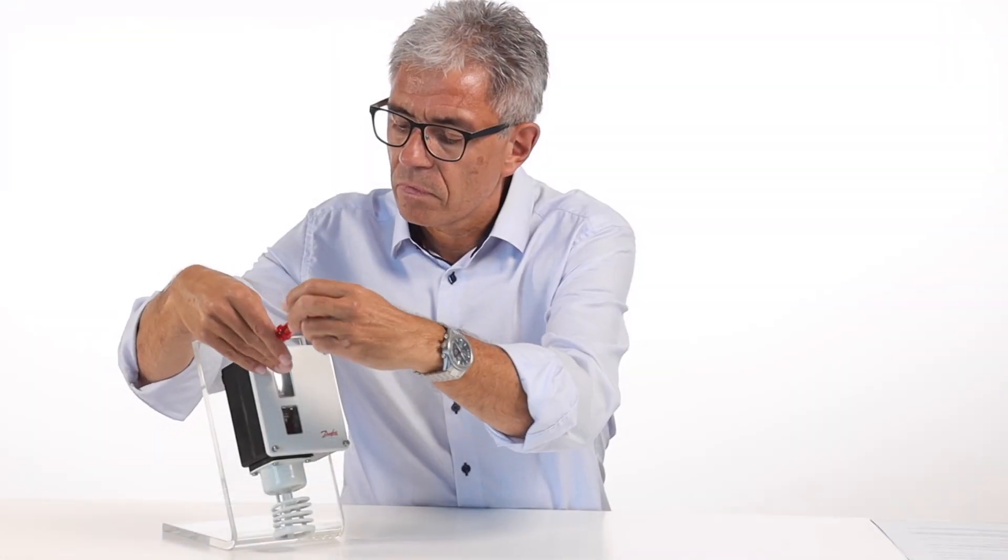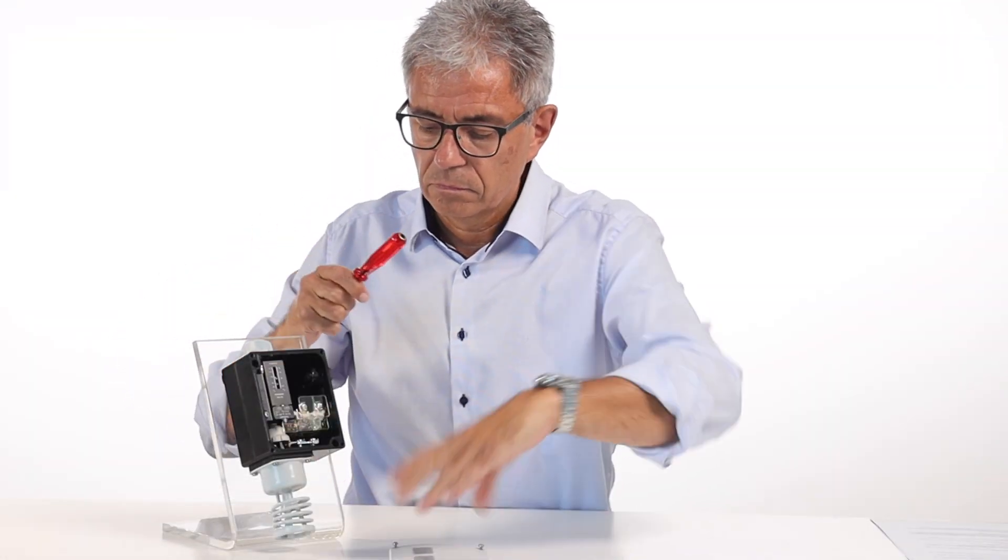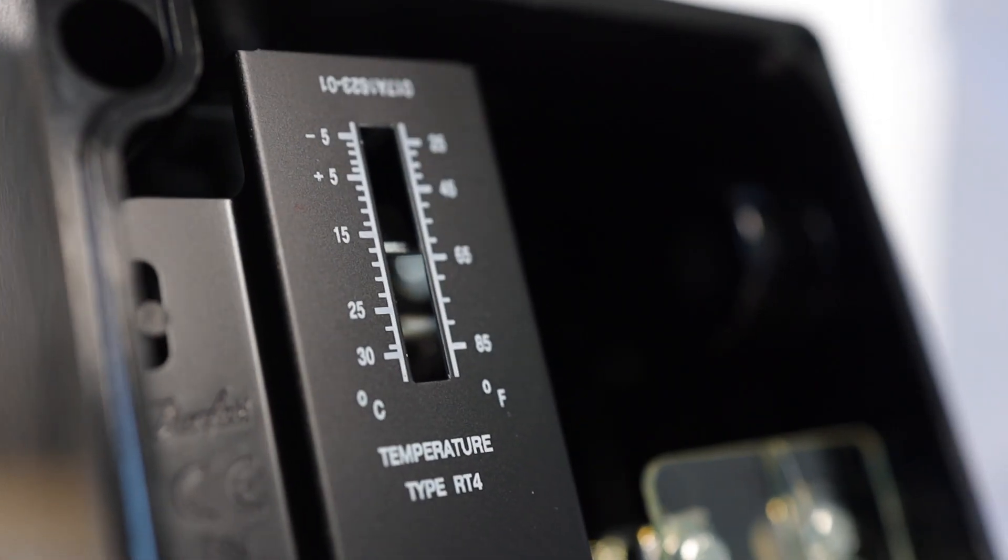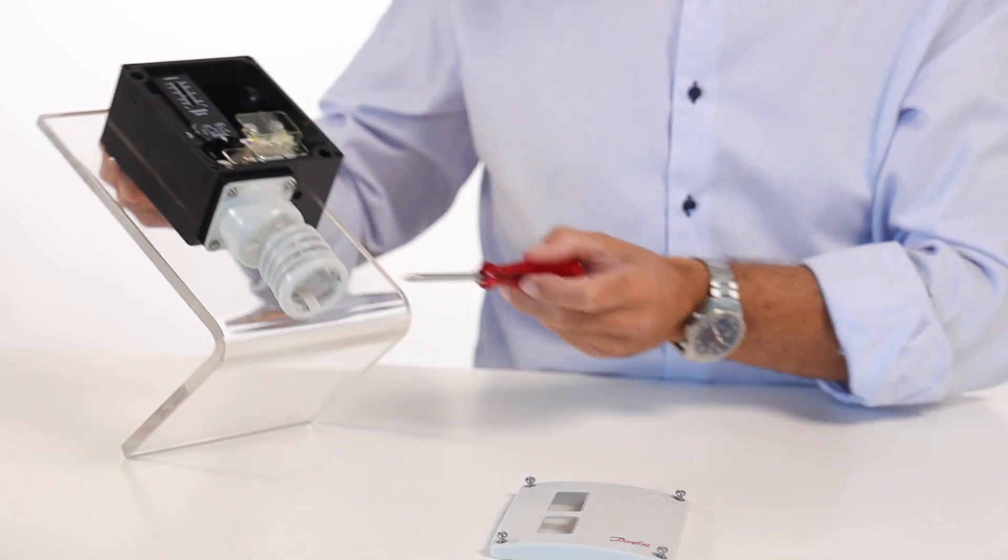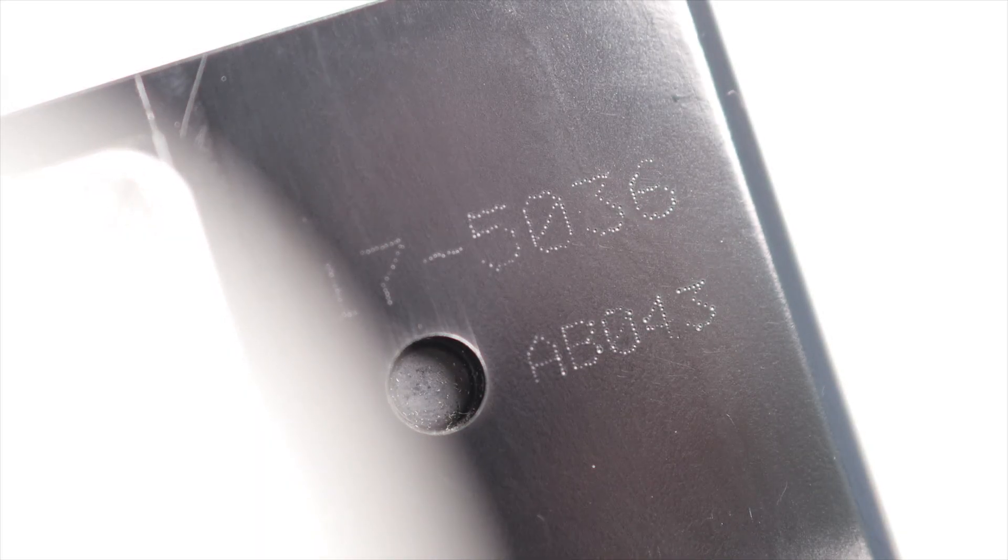First, remove the cover. Inside, you can see it is an RT4. At the bottom of the switch, you can see its unique code number.